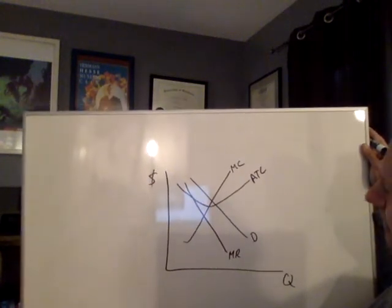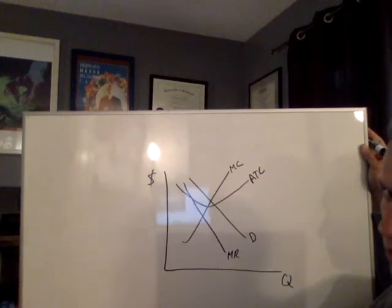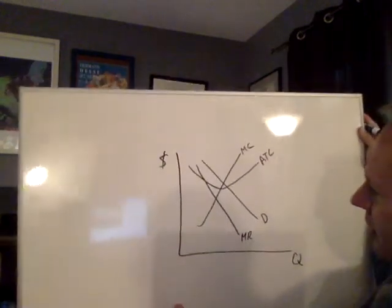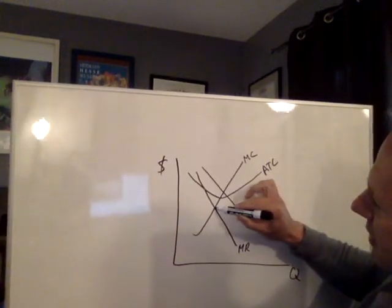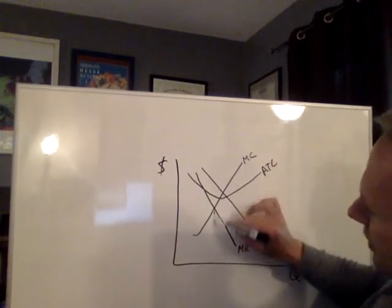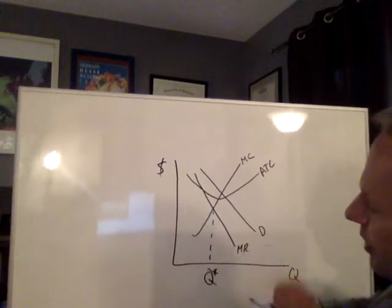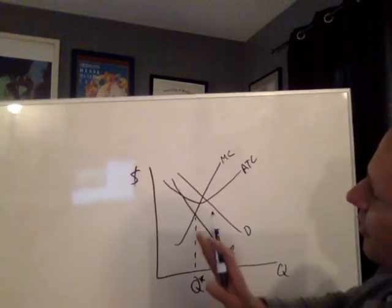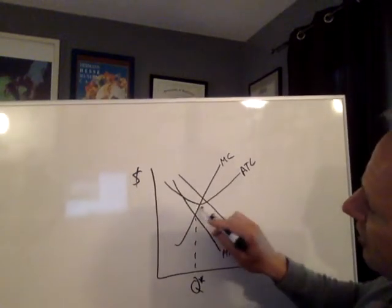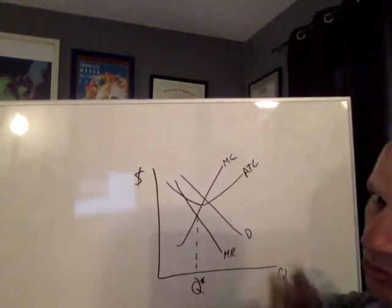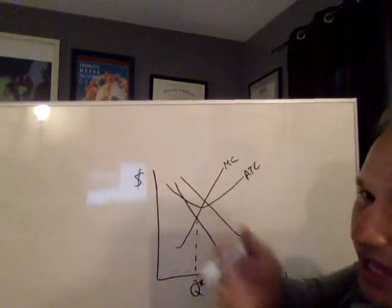Where's the firm going to produce? Marginal revenue equals marginal cost, right here. That's where they're equal. This is the firm's expected level of output because that's profit maximizing. Producing the next unit would cost more than it would bring, so why would it go there?